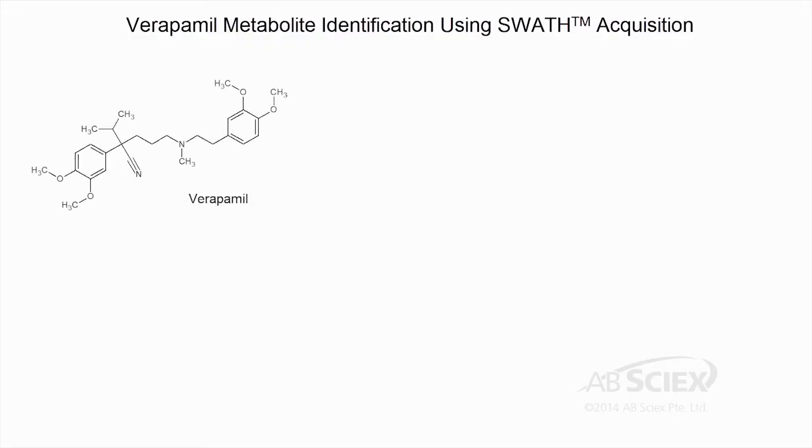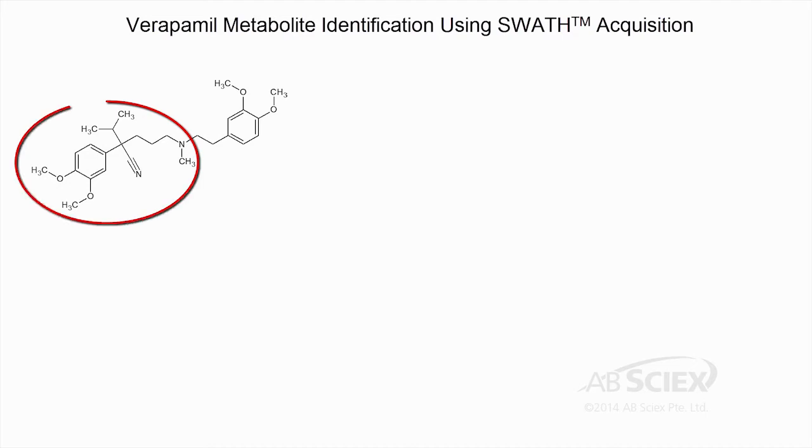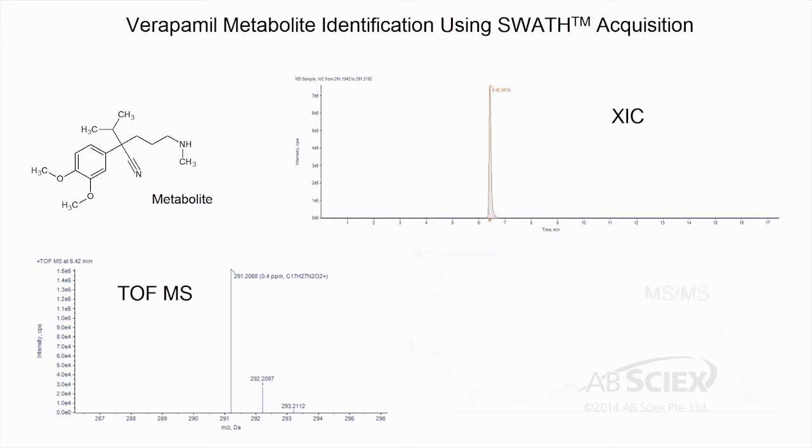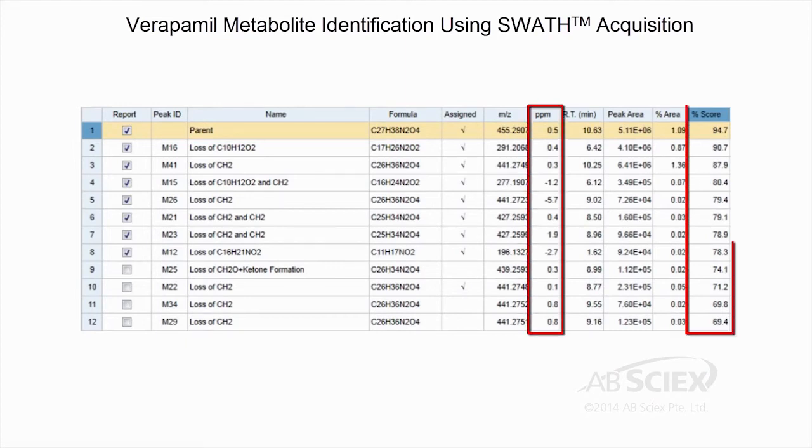Process IDA or SWATH data files with confidence knowing you are using the latest tools and strategies for discovering and characterizing metabolites. A 10 micromolar incubation of verapamil with human liver microsomes was processed on a triple TOF 6600 using SWATH acquisition. Some of the more challenging metabolites to predict are cleavage metabolites which can differ considerably from the parent drug. The resulting data provides insight into the quality of triple TOF data and the functionality of MetabolitePilot software.